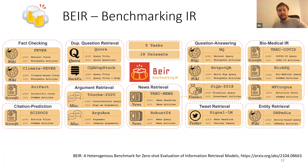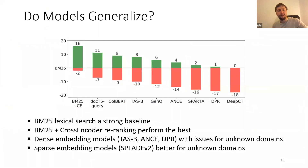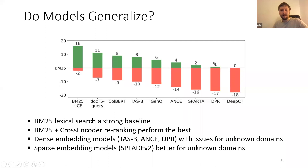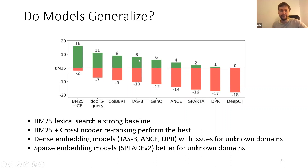We collected a lot of datasets across different information retrieval settings, and then we compared different new search methods against a baseline. The baseline was lexical search, BM25. What we saw, for example, is that the Dense Passage Retrieval model from Facebook only performed well on the one dataset — Wikipedia — where it was trained. On all other 17 datasets it was weaker than lexical search. And at that time, the best dense embedding approach, TASB, was only better on 8 out of 18 datasets than lexical search.